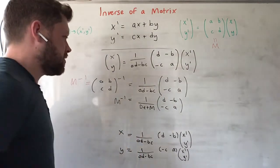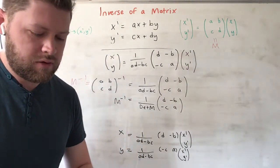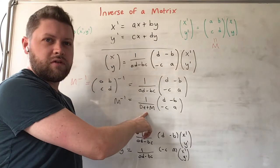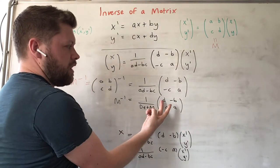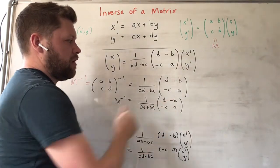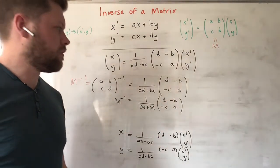Which we can rewrite as 1 over determinant of M times (d, -b; -c, a). That is our expression for the inverse matrix. It involves the determinant—you have to divide by the determinant—and you can see that you switch a and d, and b and c are multiplied by a negative.